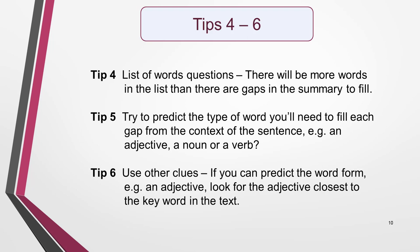Tip 5: When you read the summary, try to predict the type of words you'll need to fill each gap from the context of the sentence. Is it an adjective, a noun, or a verb, for example? Doing this will make it easier to spot the correct word, because you'll have a big clue as to what you're looking for. Tip 6: If you are able to predict the word form — for example, an adjective — look for the adjective closest to the key word in the text. This will probably be the word you need, or a synonym of it. I'll illustrate this when we come to the example exercise.